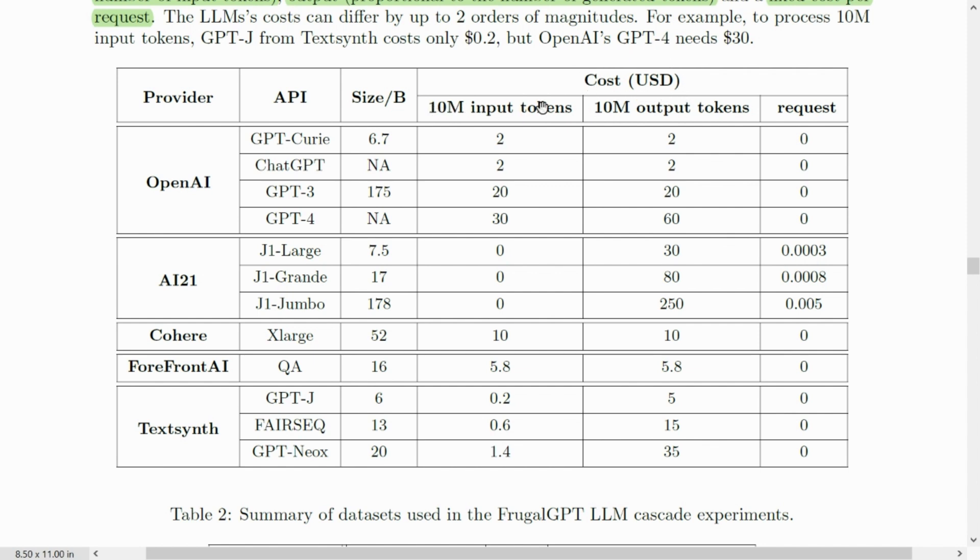We can see that the cost requirement consists of three components. The first is input tokens, the next is output tokens which depends on the length of the output. Input tokens depends on the length of your prompt. And in a few cases, there's a cost involved for each request. For example, in AI21 provider, we have 0.0003 US dollars for every request that you give to the API. However, it doesn't have any input tokens cost. Also, the costliest among all of these 12 APIs is GPT-4.